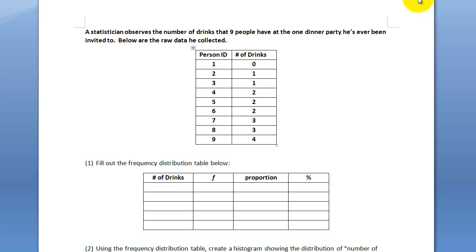Fill out the frequency distribution table below. There are five different numbers here: zero, one, two, three, and four. So there are five different groups — a group of zeros, group of ones, group of twos, group of threes, and group of fours. Number of drinks: zero, one, two, three, and four.